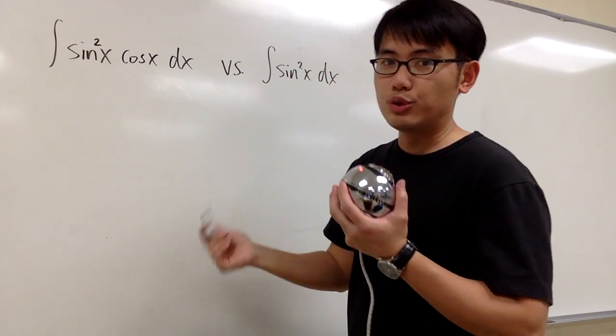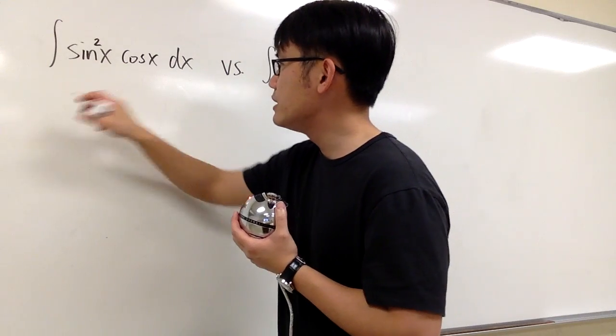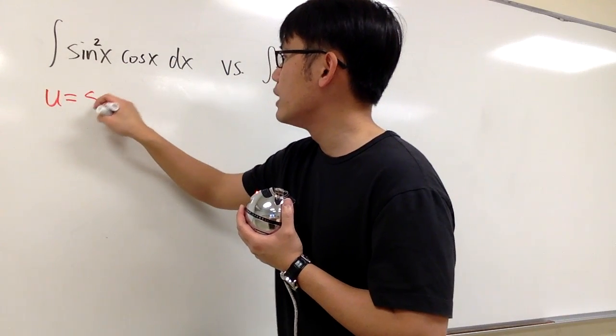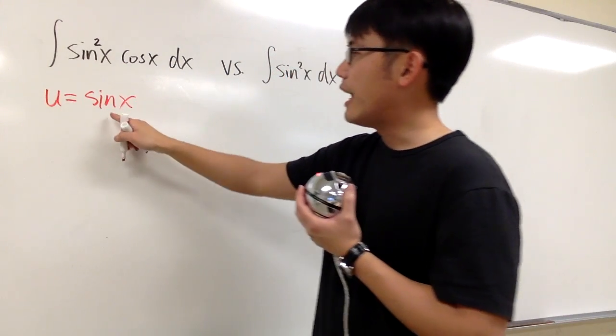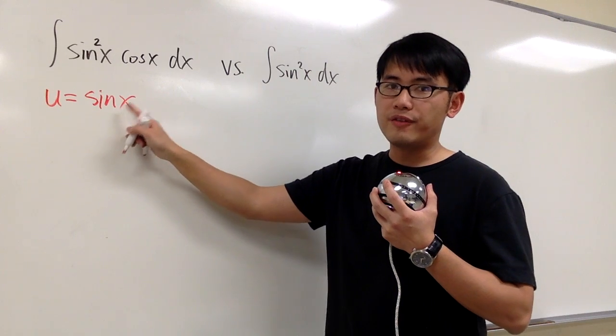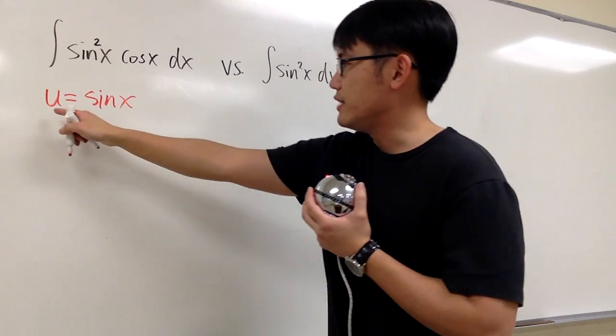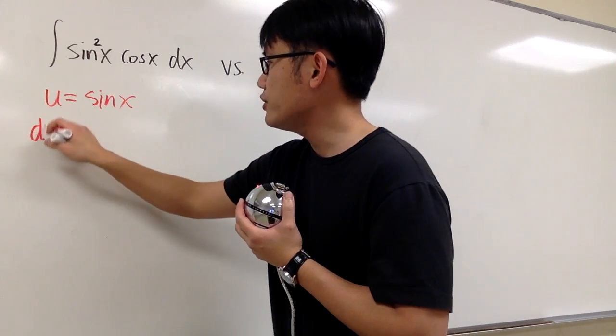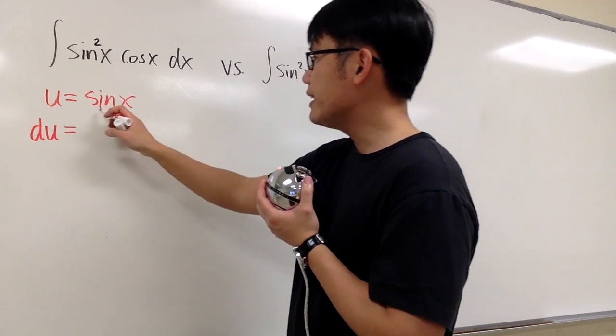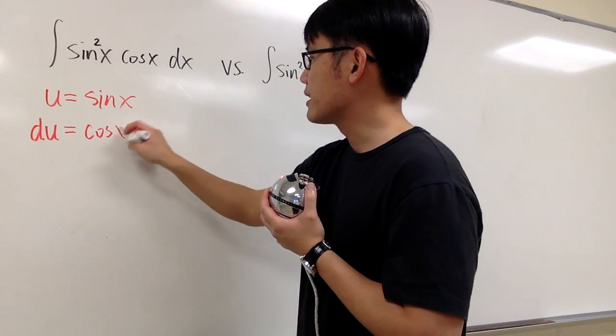So what we can do is we can just use u sub. I'm just going to begin with this by saying u is equal to sine x. And notice that I just picked sine to the first power x. Because if I look at this equation and I differentiate that, I'll get du and the derivative of sine x is cosine x dx.